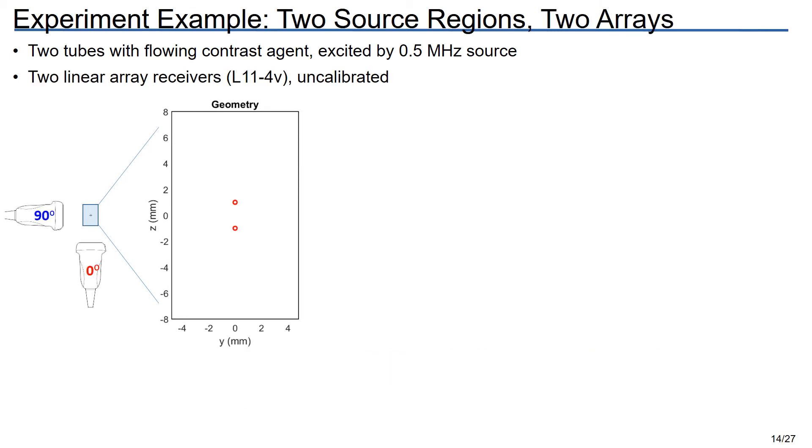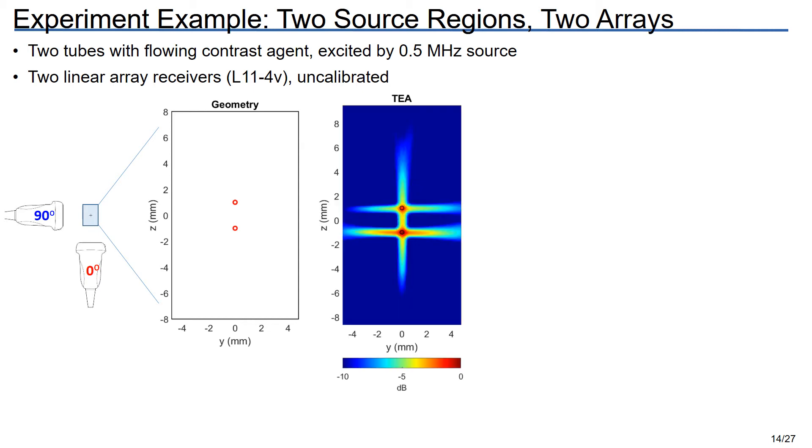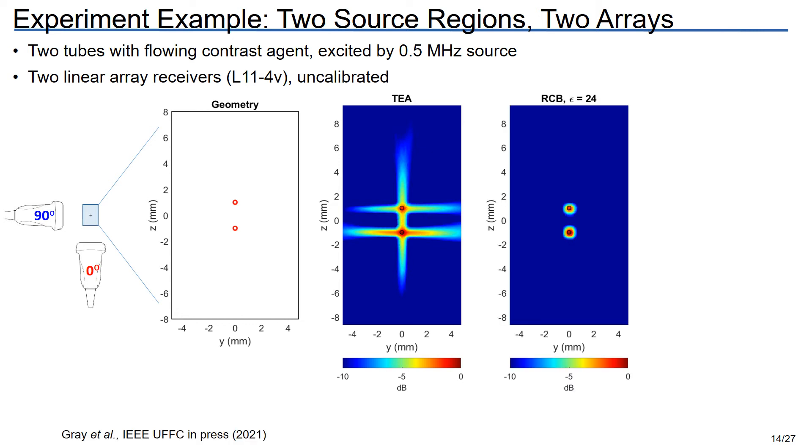However, there is something that we can do about it. In this example, we've added a second array, this time at 90 degrees. This gives us an additional set of look angles and increases the total array aperture. When we use this data to beamform with TEA, we see that we have a fighting chance of separating the two source regions, and it's even much better with RCB.